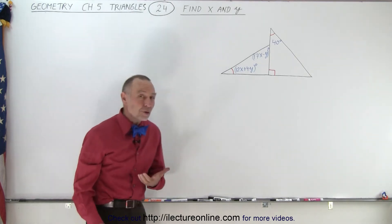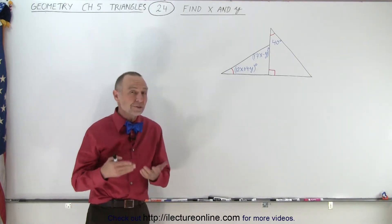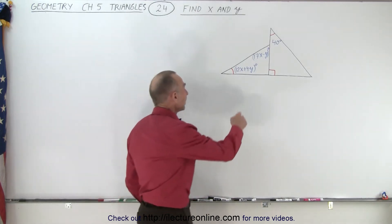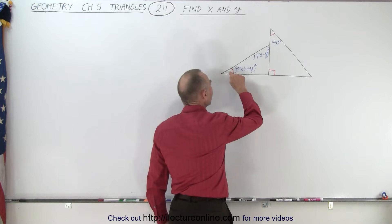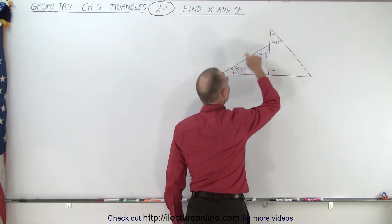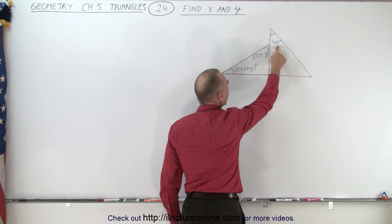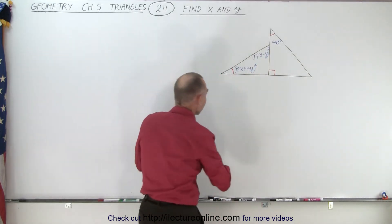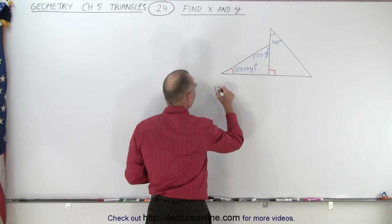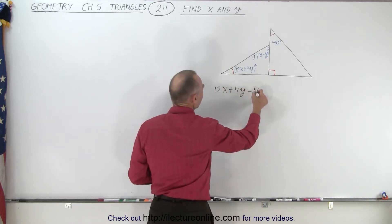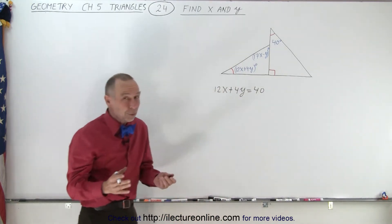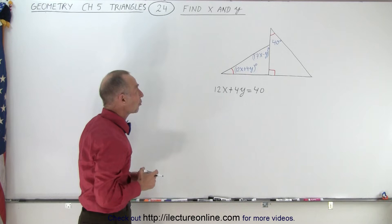Now we're probably going to use the principles of congruency of triangles to figure this out. They already told us that this angle corresponds to this angle and they have the same angular measure, therefore the 40 degrees must equal 12x plus 4y degrees. So we can say that 12x plus 4y must equal 40, but notice there's two variables in there, X and Y. So with one equation, two variables, we cannot yet solve that.